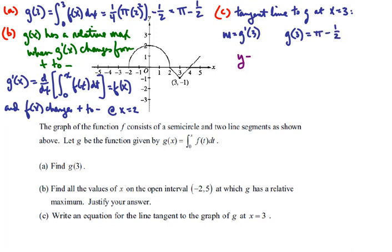So we get y minus y1. y1 is just g of 3, which is pi minus 1 half. And that's equal to m, which is g prime of 3. And since g prime of 3 is really equal to f of 3, g prime of 3 is equal to negative 1. And x1 is equal to 3 there. So we have y minus the quantity pi minus 1 half is equal to negative 1 times x minus 3.